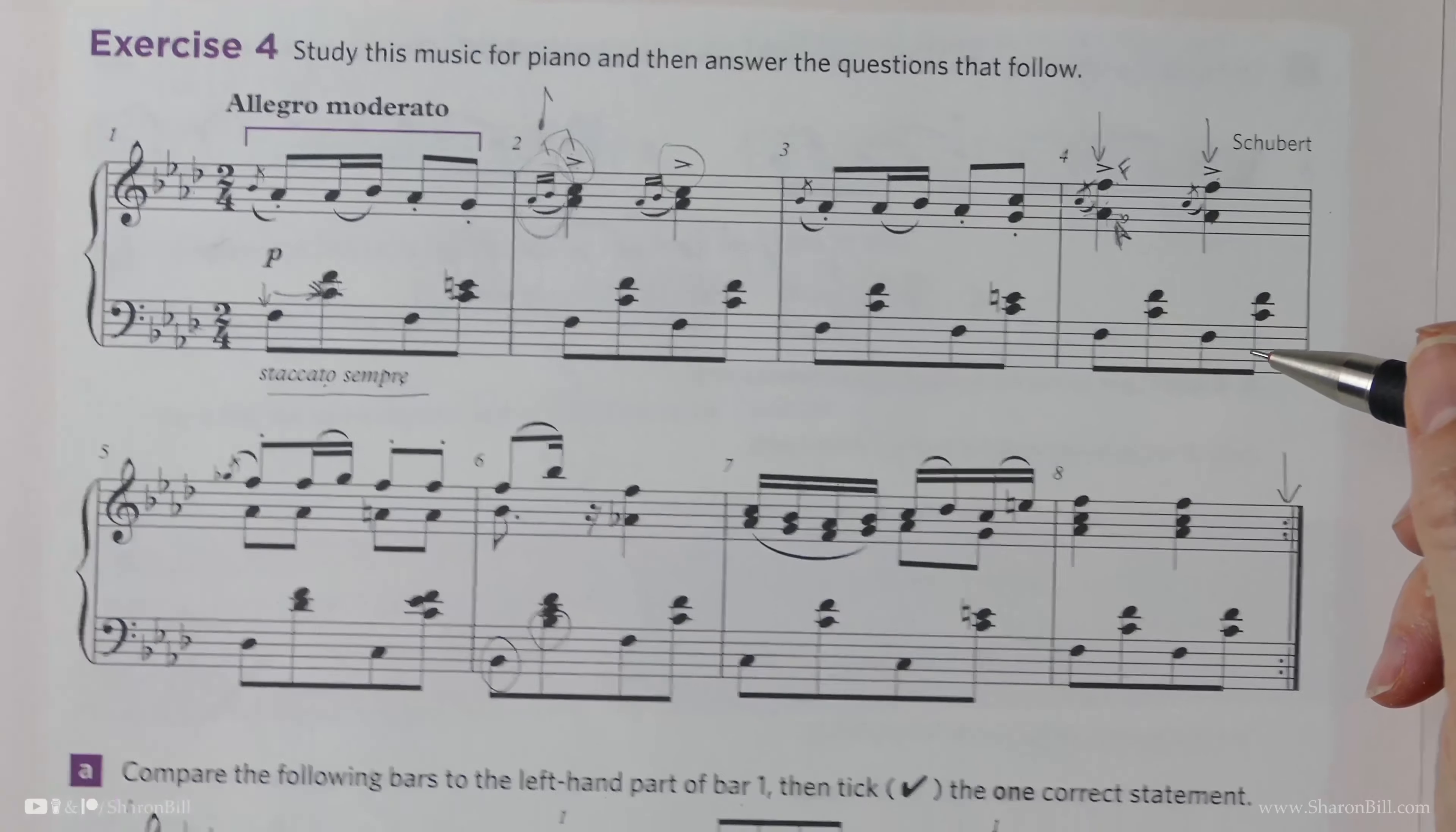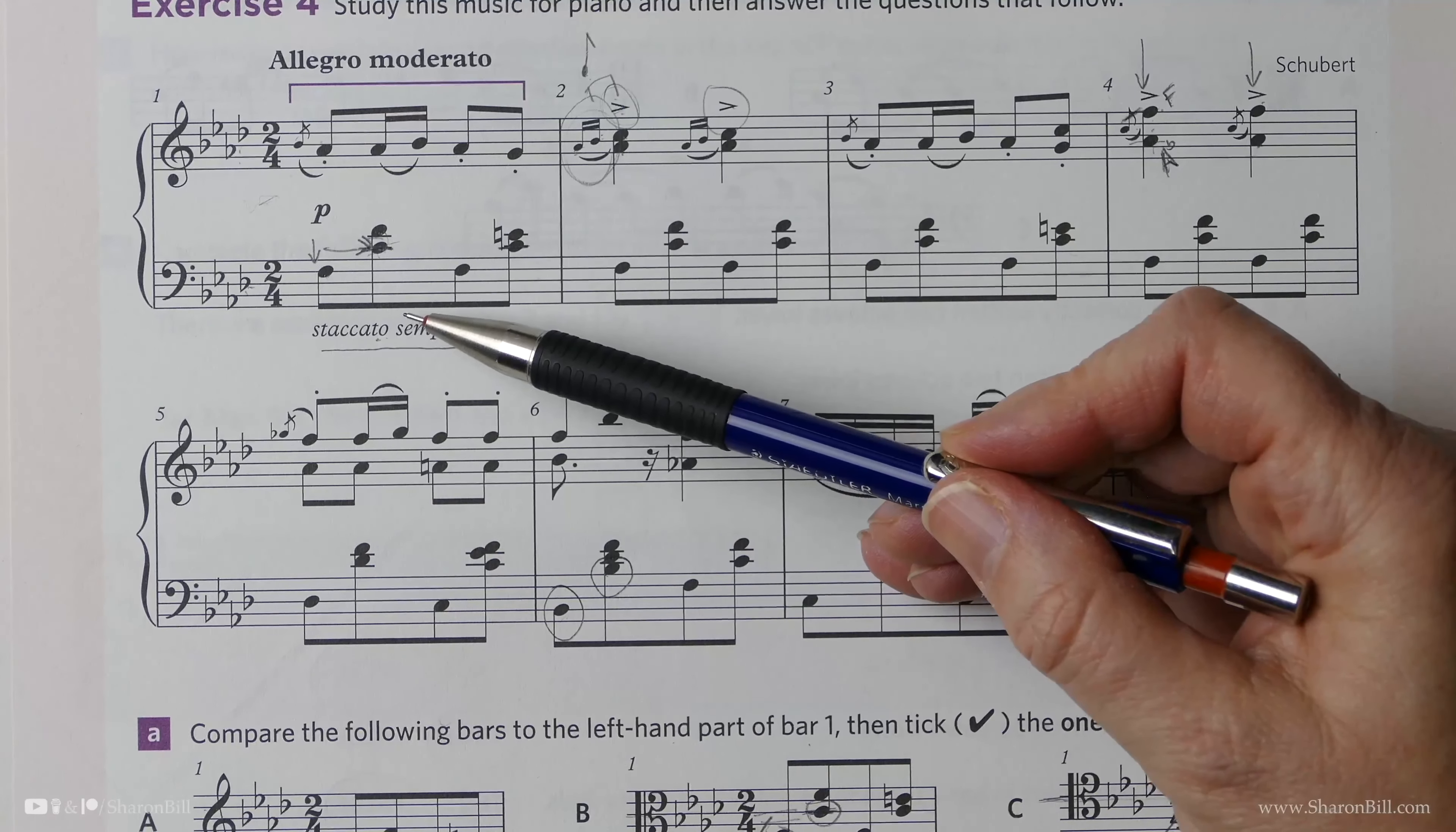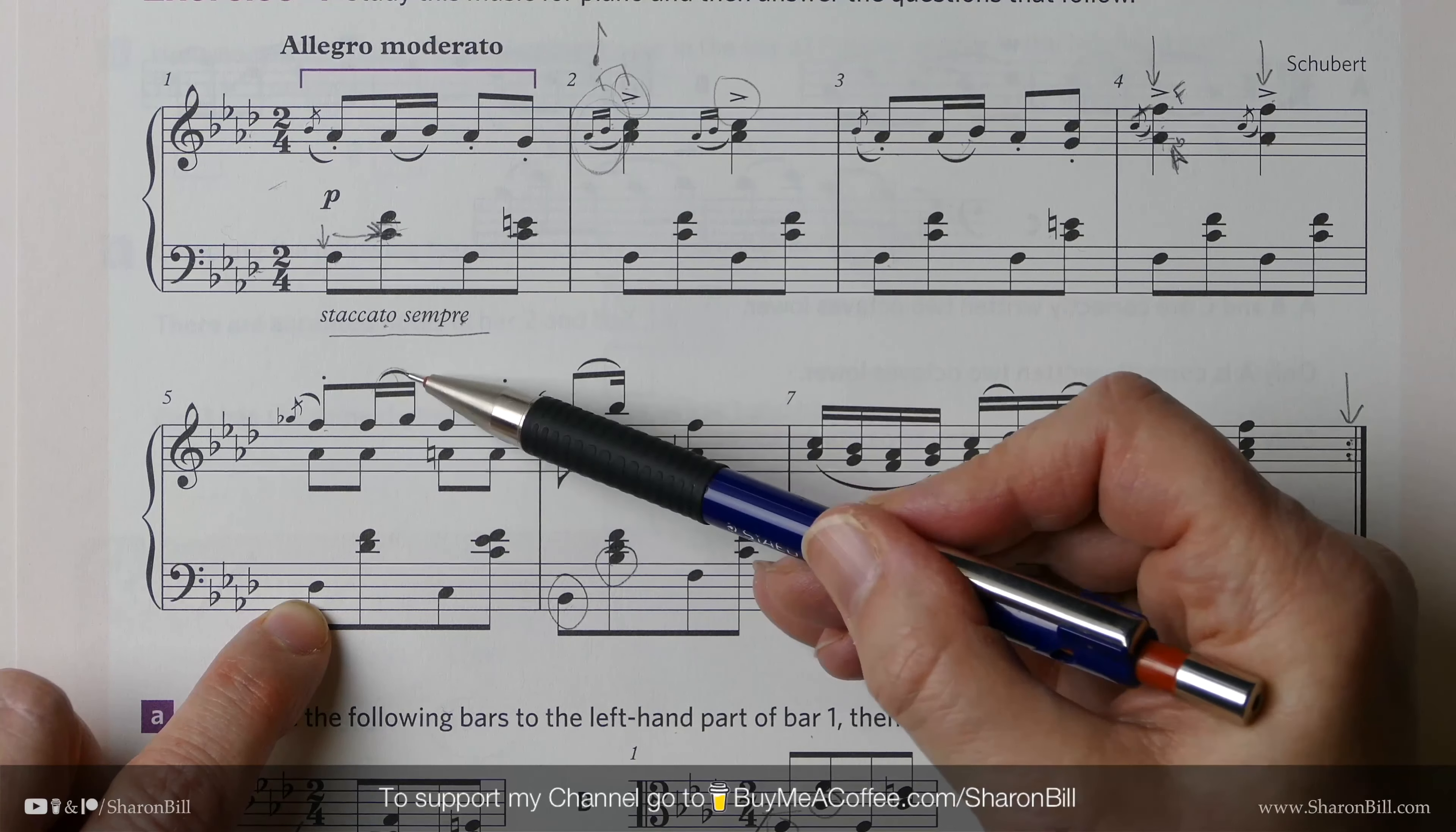Bar three has the same rhythm and articulation, not necessarily the same pitch, as bar one. Bar one has the same as bar three—the same articulation with the same rhythm. We've got the left hand quavers, the acciaccatura, semiquavers, and quavers. It's the same rhythm as bar five with the same articulation. We've got that slur with staccato. It's a different pitch, but the rhythm and articulation is the same. So bar five.